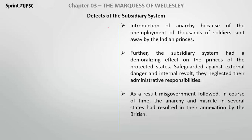Now let's talk about the defects of the Subsidiary Alliance System. The army soldiers of the Indian rulers became unemployed, leading to anarchy and groups like the Pindaris. The system also had a demoralizing effect on the princes — they became lazy and did not pay sufficient attention to administrative responsibilities, leading to misgovernment. After misrule and misgovernment, there was more justification for annexation.